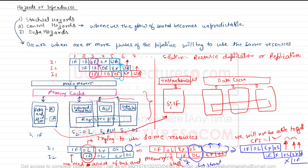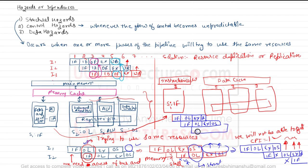Even with a separate instruction cache, we can now pipeline instruction fetch freely alongside other stages. However, operand store and operand load still occur simultaneously and both try to access the data cache — causing another structural hazard. To resolve this, we would need to change the entire pipeline stage design.